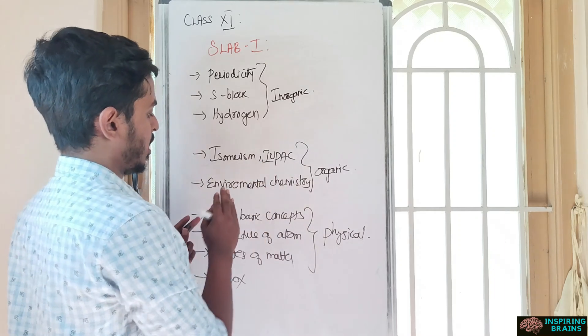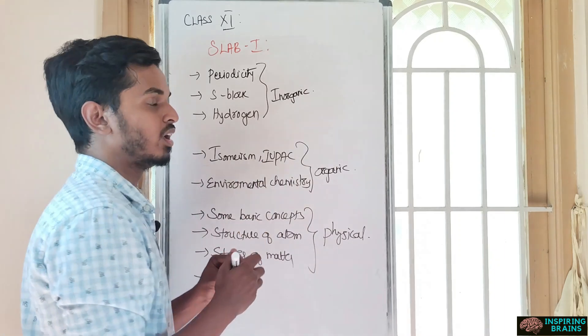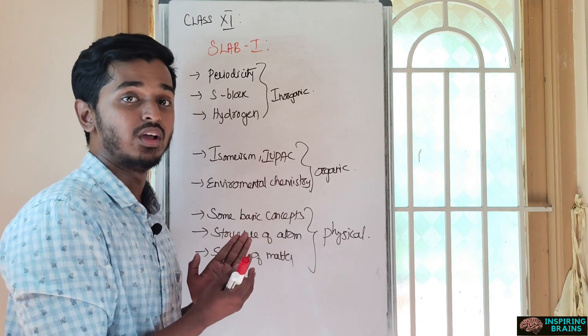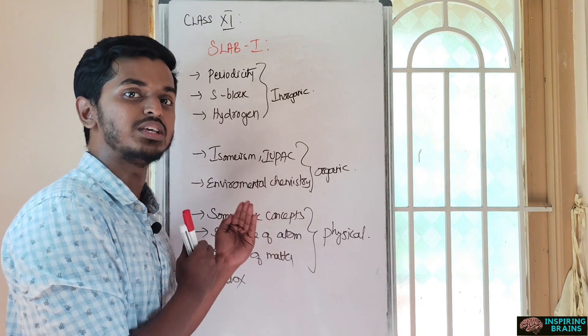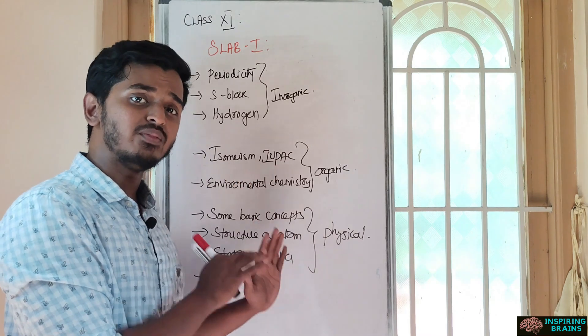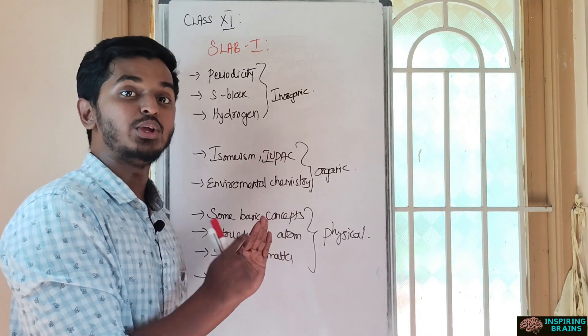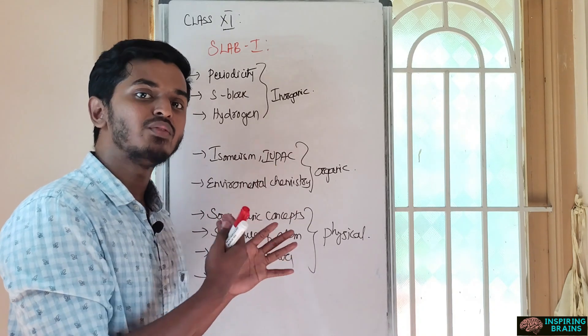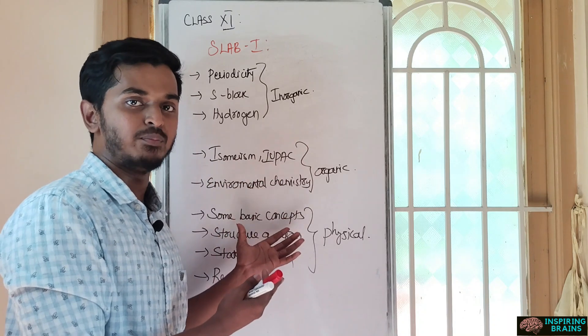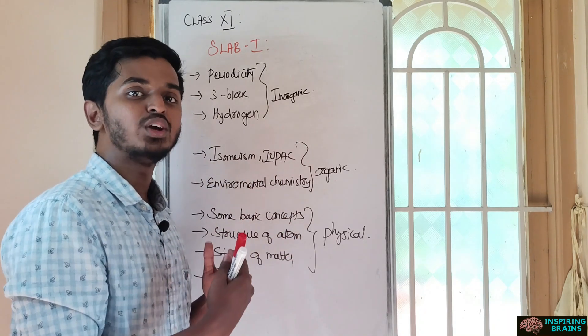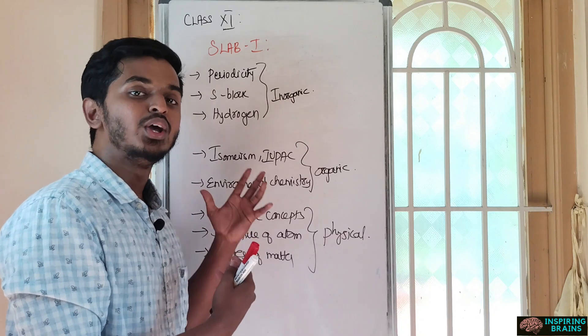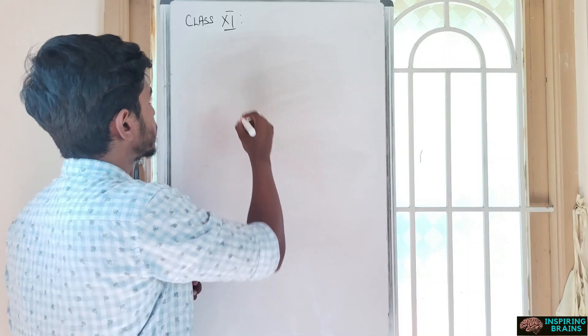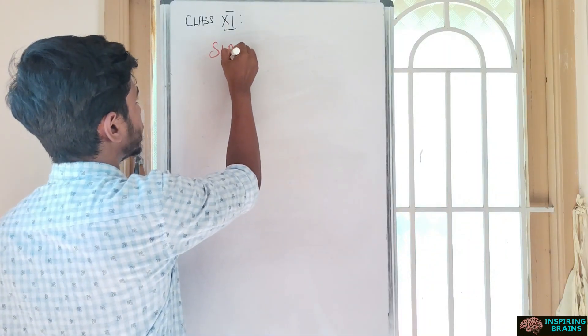Slab one units I'm planning in a very easy way, so you can easily cover. Anyone can study these units in slab one and score more marks. Once you're done with slab one and you're very sure, then go with slab two. This is applicable for both freshers and repeaters. If you're a fresher, go with slab one, and if at all you have time, go with slab two. If you're a repeater, you can easily cover slab one quickly, then go to slab two.